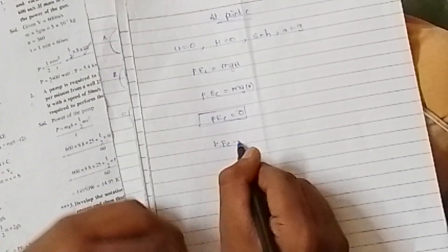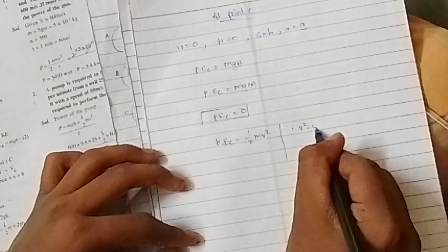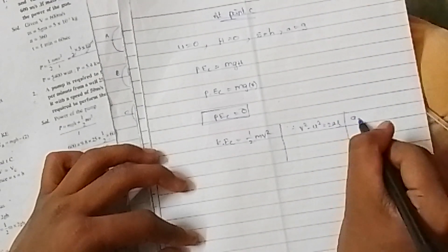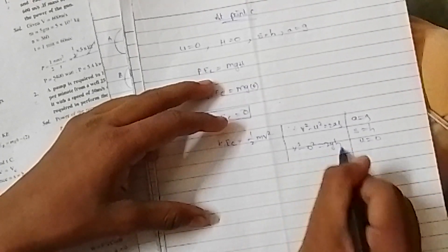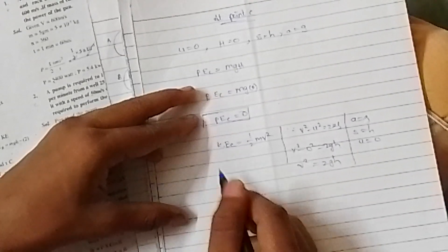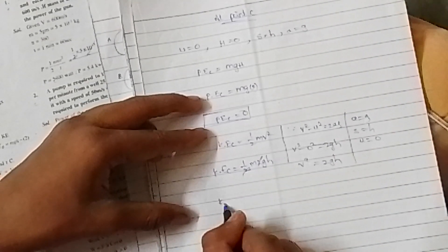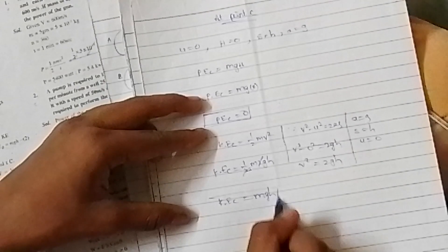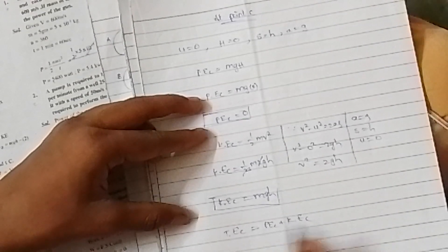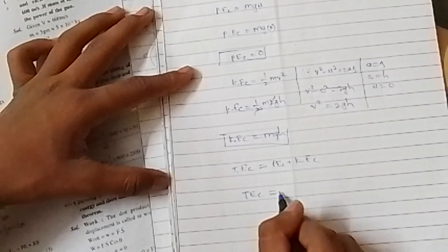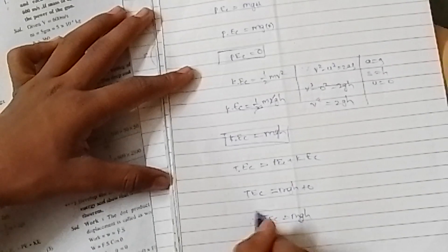Going to kinetic energy at C: KE at C equals half m v squared. Using v squared minus u squared equals 2as, with a equal to g, s equal to h, and u equal to 0: v squared equals 2gh. Substituting: half m into 2gh — the 2s cancel — giving KE at C equals mgh. So TE at C equals PE at C plus KE at C, which is 0 plus mgh, meaning TE at C equals mgh.